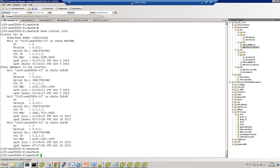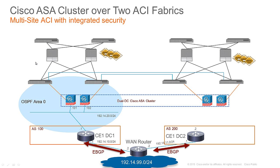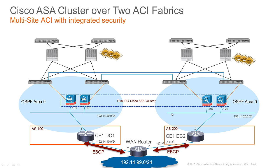Going back to the topology diagram — the ASAs are configured in individual multi-context routed mode, which means that the two ASAs in data center one and the two ASAs in data center two have the same subnet 192.14.20 towards their outside interface, but that subnet is not extended between the sites. Although they share the same subnet, units one and two will peer via OSPF with the CE router in data center one, and units three and four will peer via OSPF with the router in data center two — but they don't peer across.